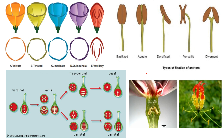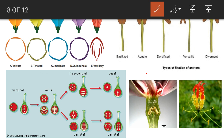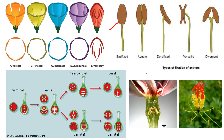Another important character is fixation of anther lobes to the filament. In the basifixed type, the filament and anther lobe are fixed at the base of the lobes. In adnate, the filament runs throughout the length of the anther lobe. In dorsifixed, the filament is attached to the dorsal side of the anther lobe. In versatile, the filament is attached to the anther lobe by a single point, allowing the anther lobes to rotate 360 degrees. In divergent, a dithecous anther is spread out by branches of the filament. Important terms related to the androecium are introrse, extrorse, inserted and exserted.